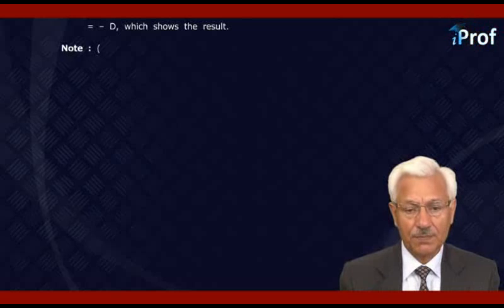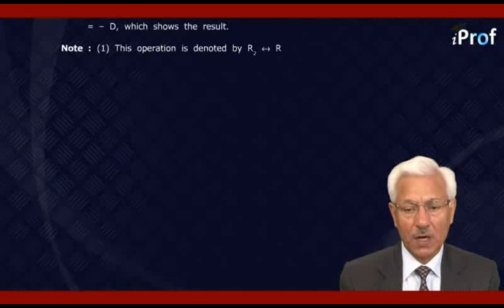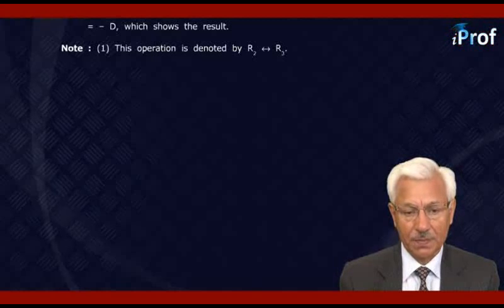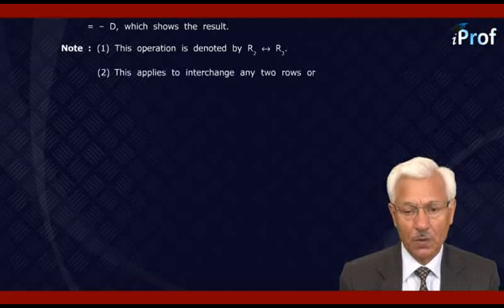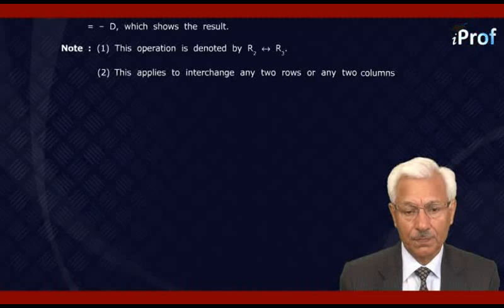Note that this operation is denoted by R2 ↔ R3, meaning the elements of row 2 and row 3 are interchanged. Second, this applies to the interchange of any two rows or any two columns — but not a row with a column.